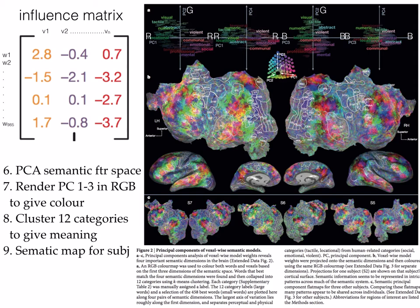For each voxel, the BOLD signals are influenced by 985 semantic words. These words can be transferred into the principal component space, and then the first three components are rendered in red, green, and blue. So each voxel can be represented with the three main principal semantic components as an RGB color. The result is a colorful semantic map that represents different meanings. Here is the final semantic map — a colorful one — and that is for one subject.